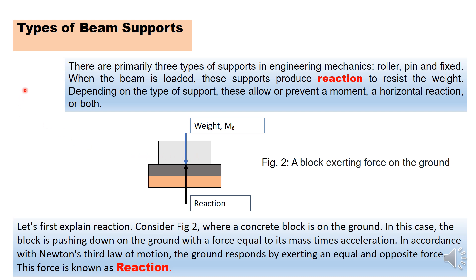And then the supports we have in engineering mechanics are roller, pin, and fixed supports. When the beam is loaded, these supports produce reactions to resist the weight, depending on the type of support. This allows or prevents a moment, horizontal reaction, or both.